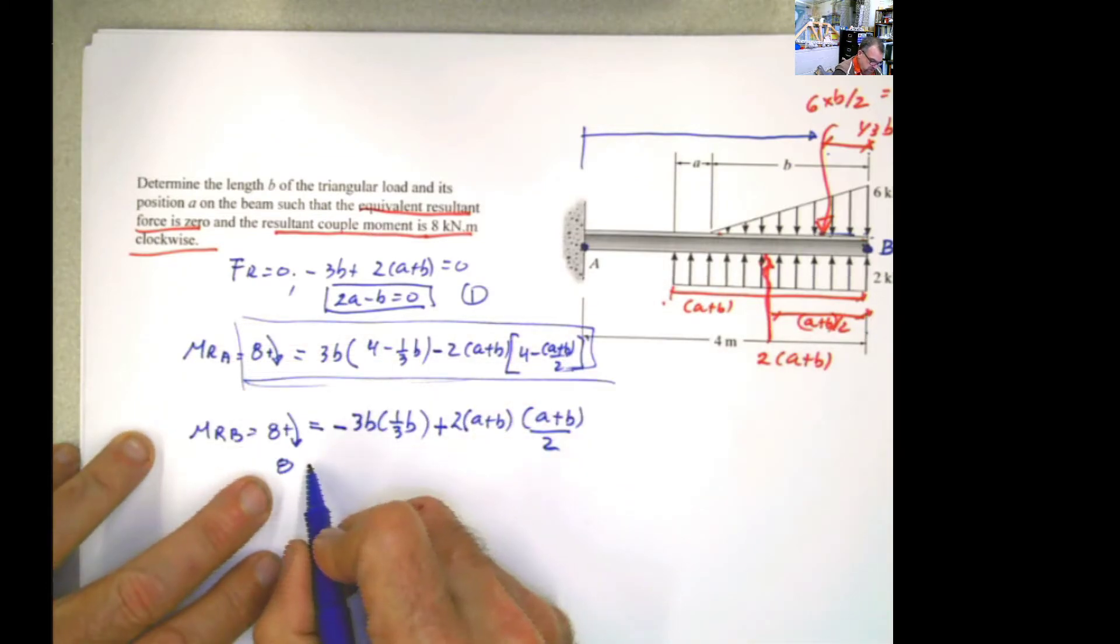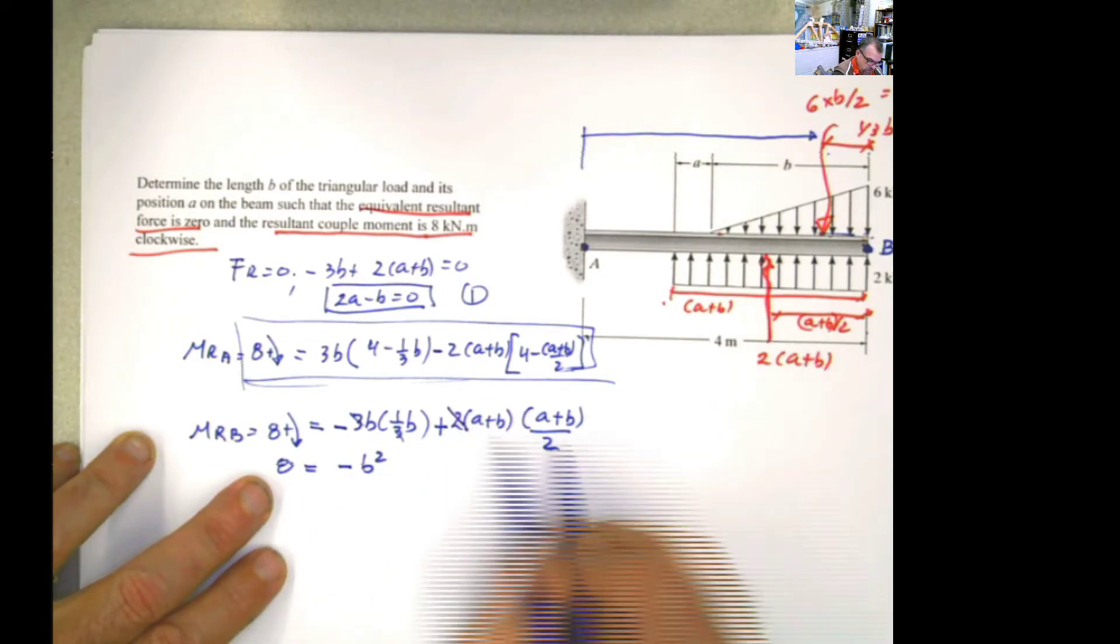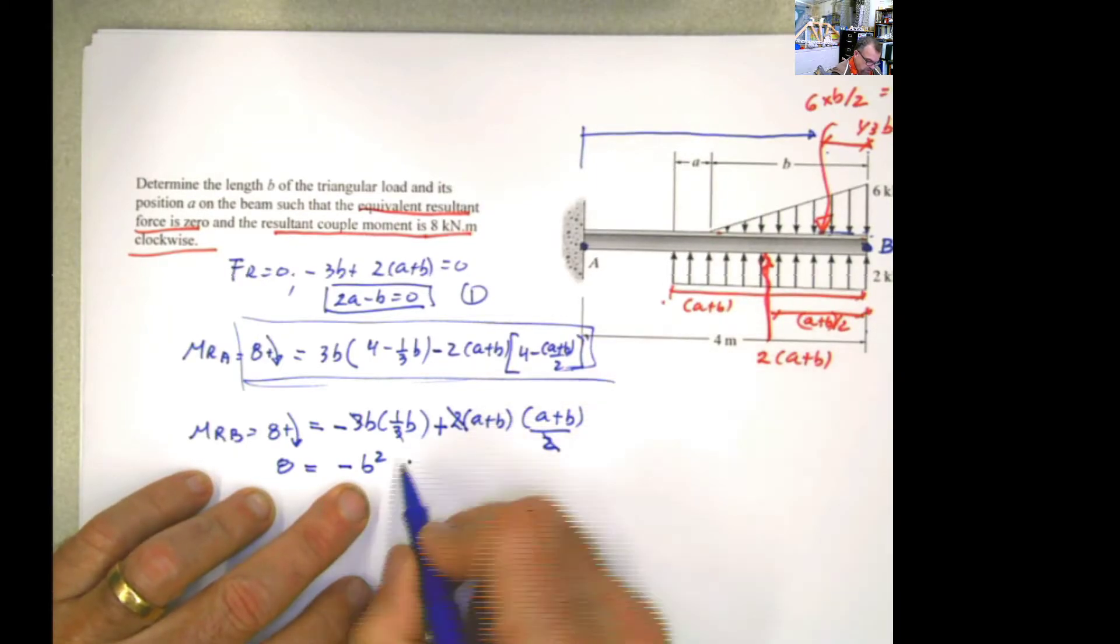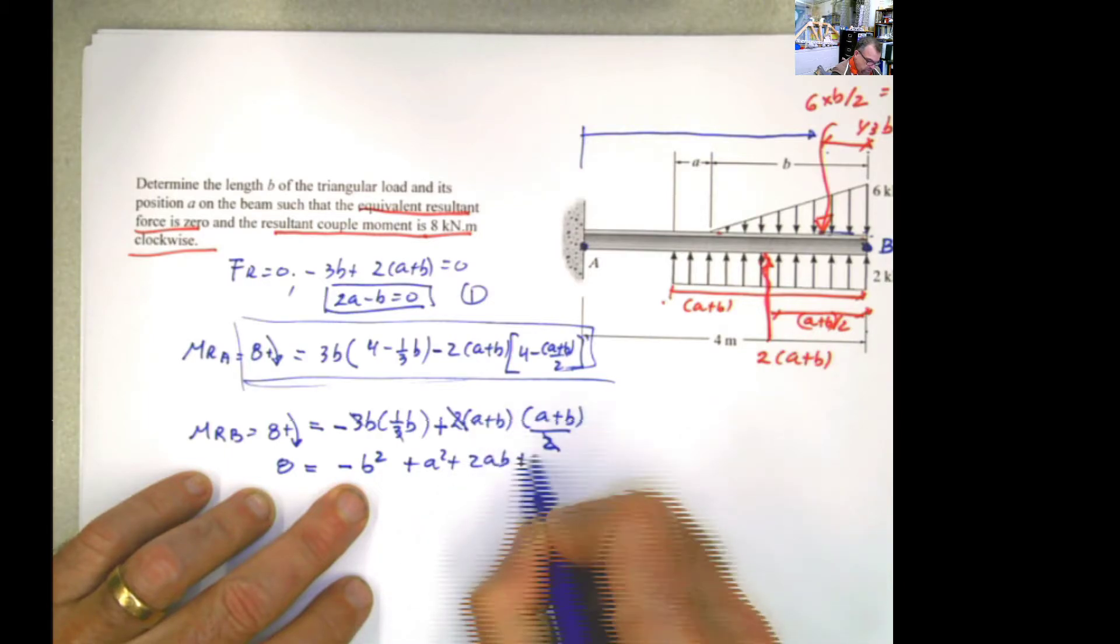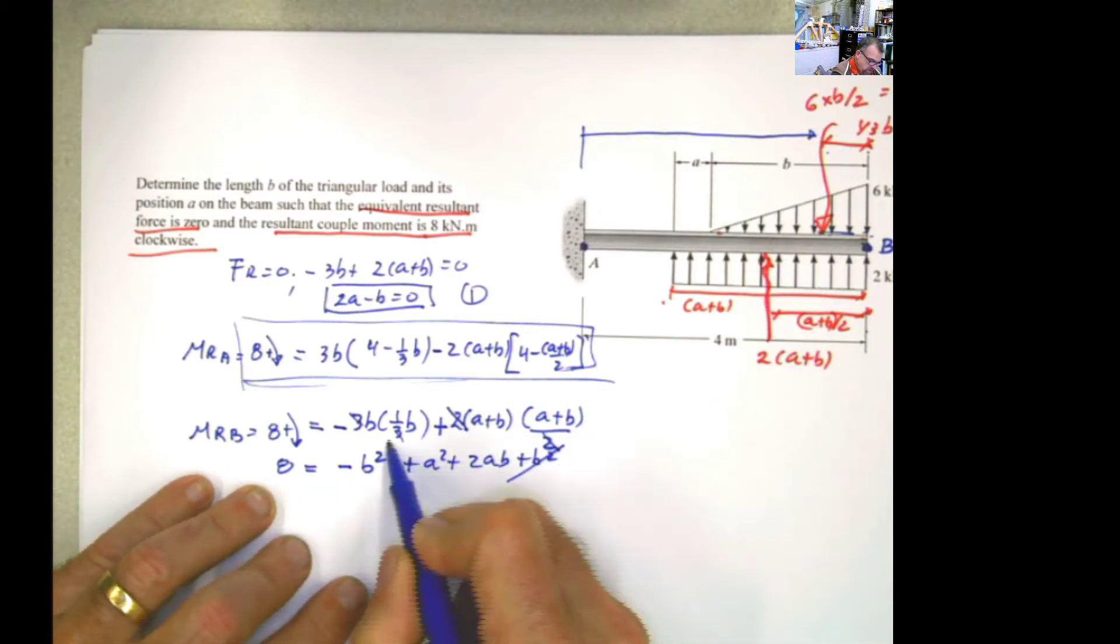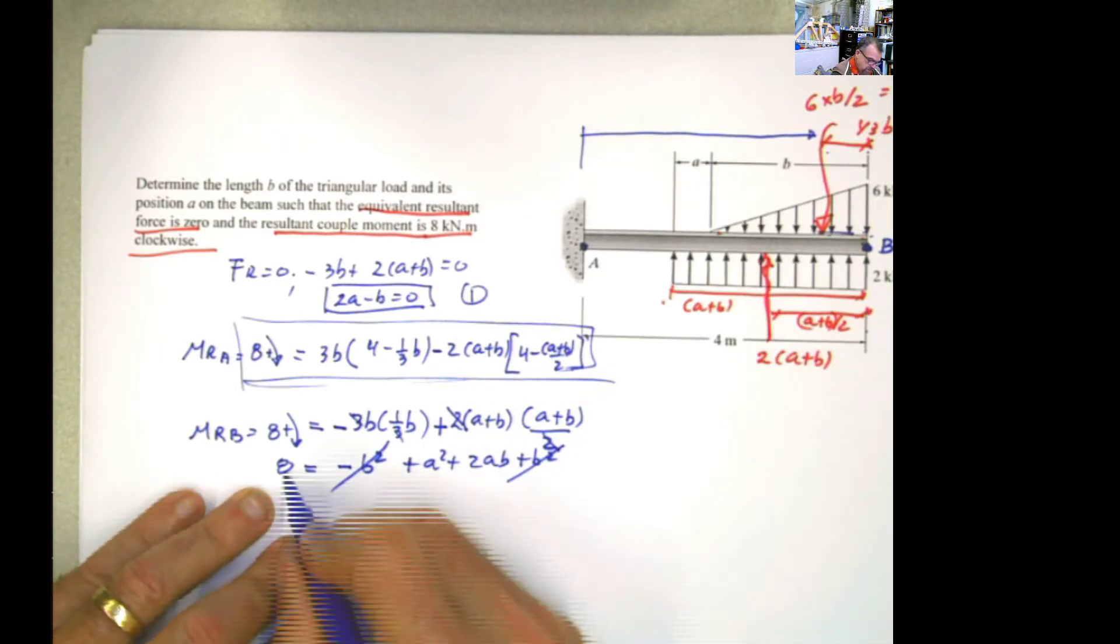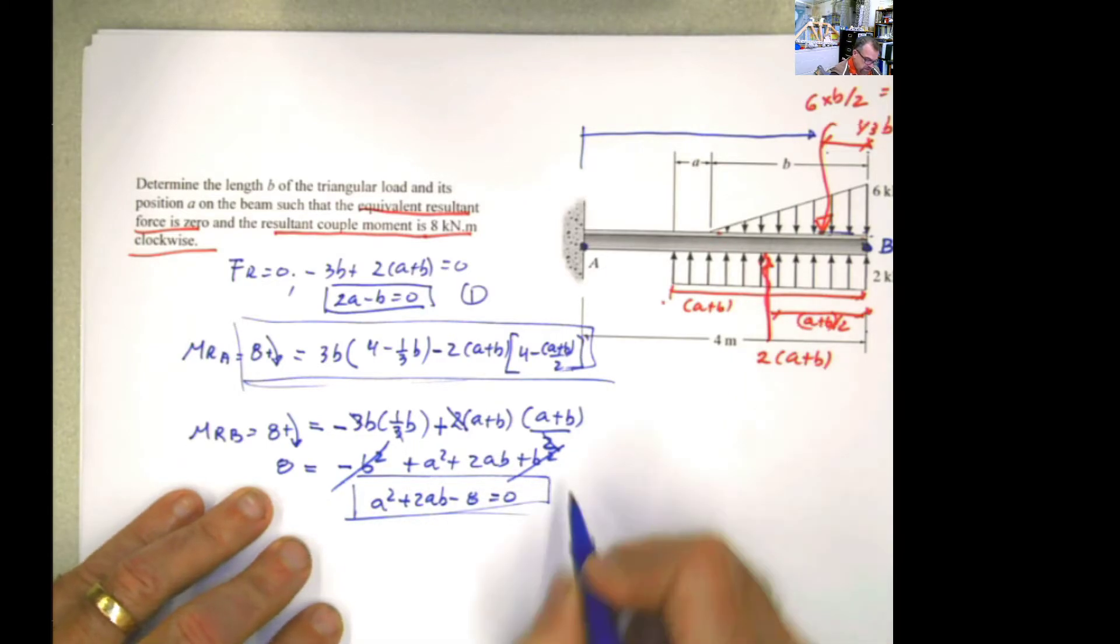You're going to solve that and compare. But I'm going to do this. It's going to be equal to this and this cancel out. So it's going to be minus b squared. Then I have here these two and these two cancel out. And then I have a squared. This is just a square binomial square. So a squared plus 2ab plus b squared. And this b squared and this negative b squared cancel each other out. So I pass the a to the other side. And I have a squared plus 2ab minus 8 equals 0. There you go. And this is my equation two.